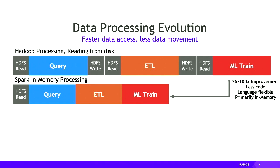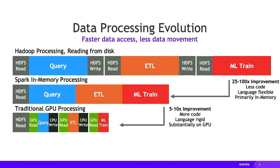A few years ago, Apache Spark came along, which was a big step forward. Spark takes the point of view that if we keep all the data in memory and distribute it across nodes, we can get much better efficiency by passing data directly between the different phases rather than writing to disk. That led to much higher efficiency and better scaling.